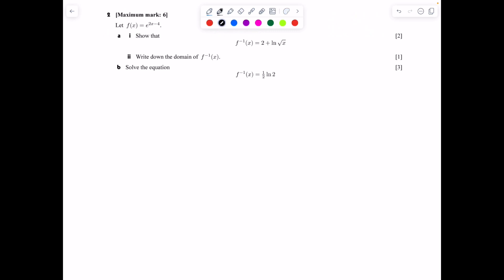Alright, so this question, we are given f(x) = e^(2x-4). And if you're ever asked to find the inverse of a function, you're really asked to find the opposite. So you switch the x and the y.